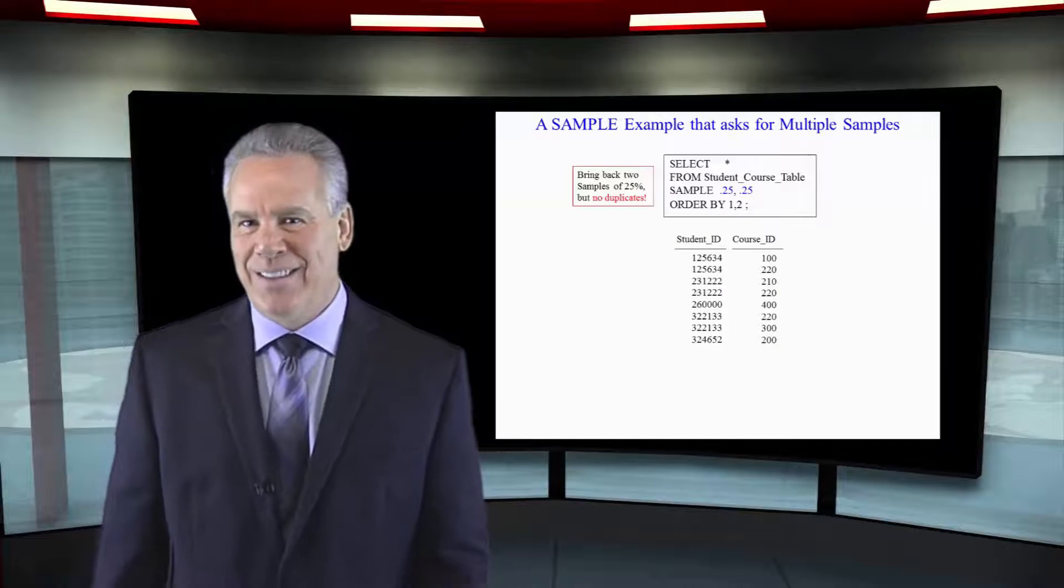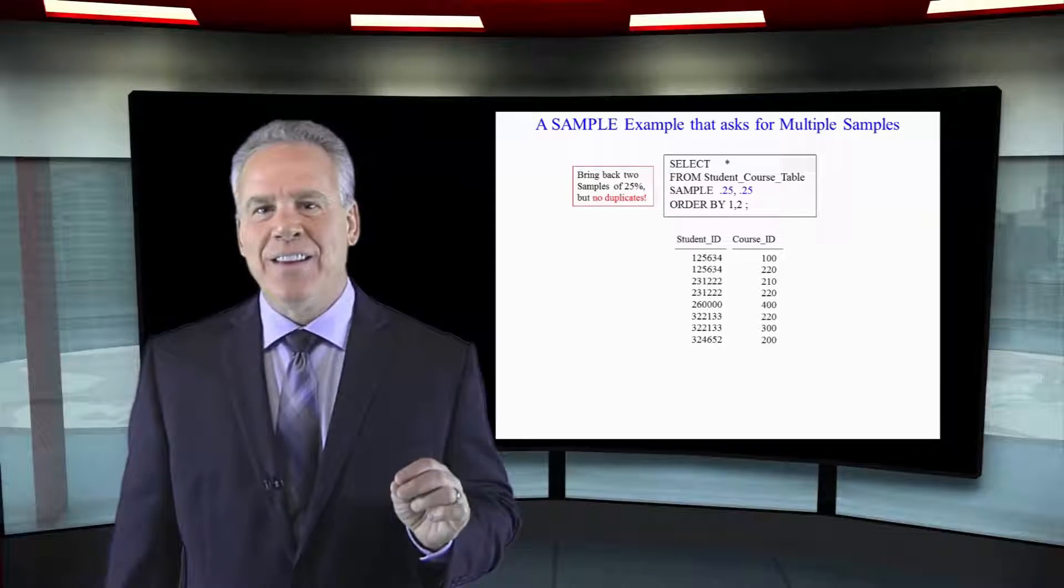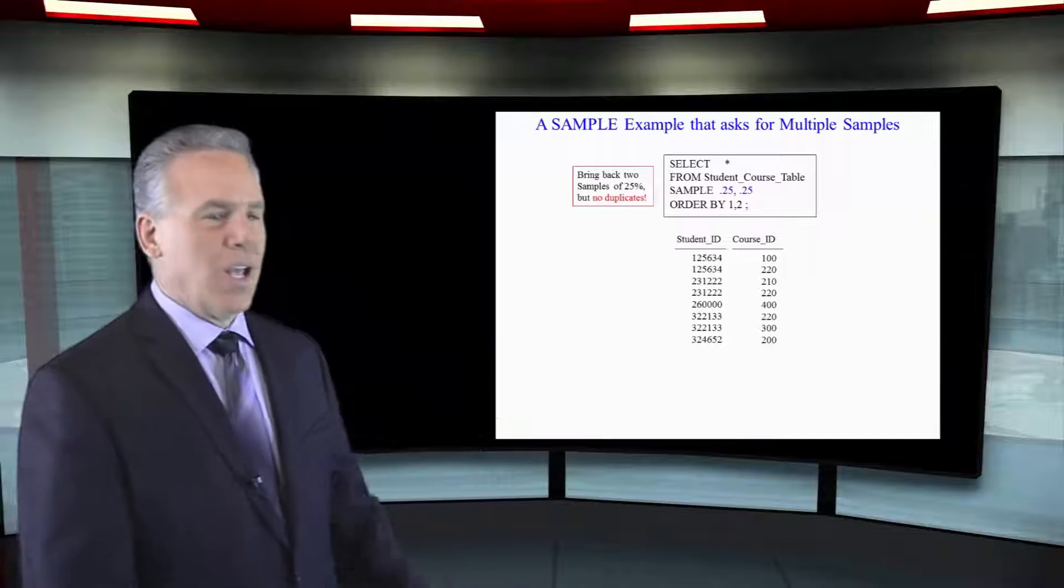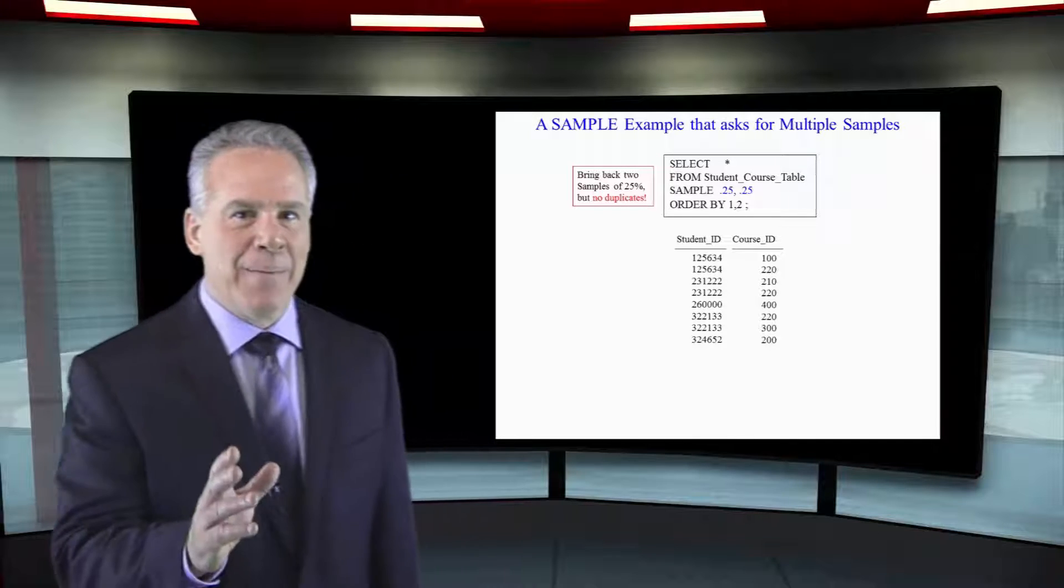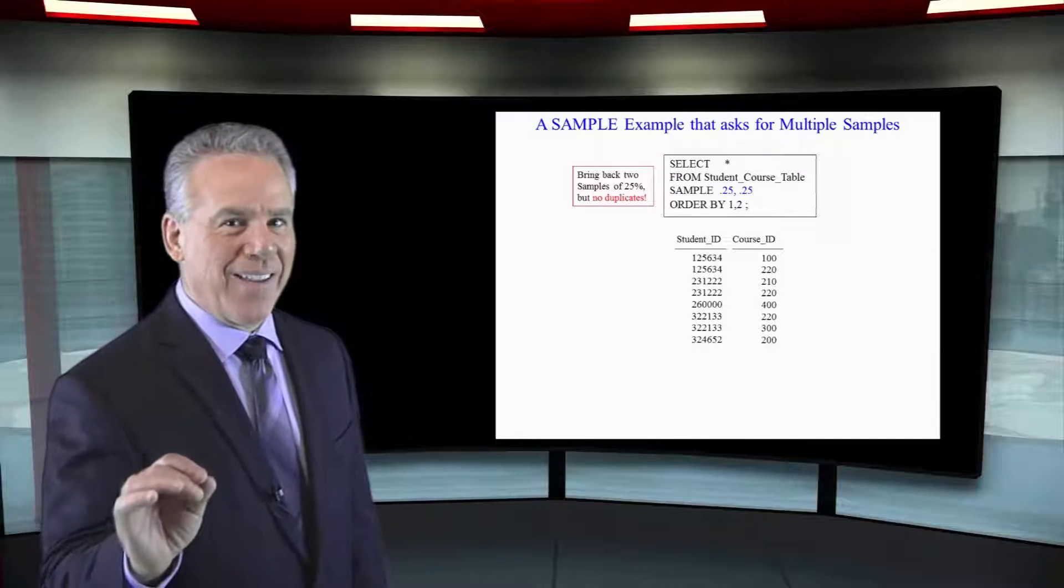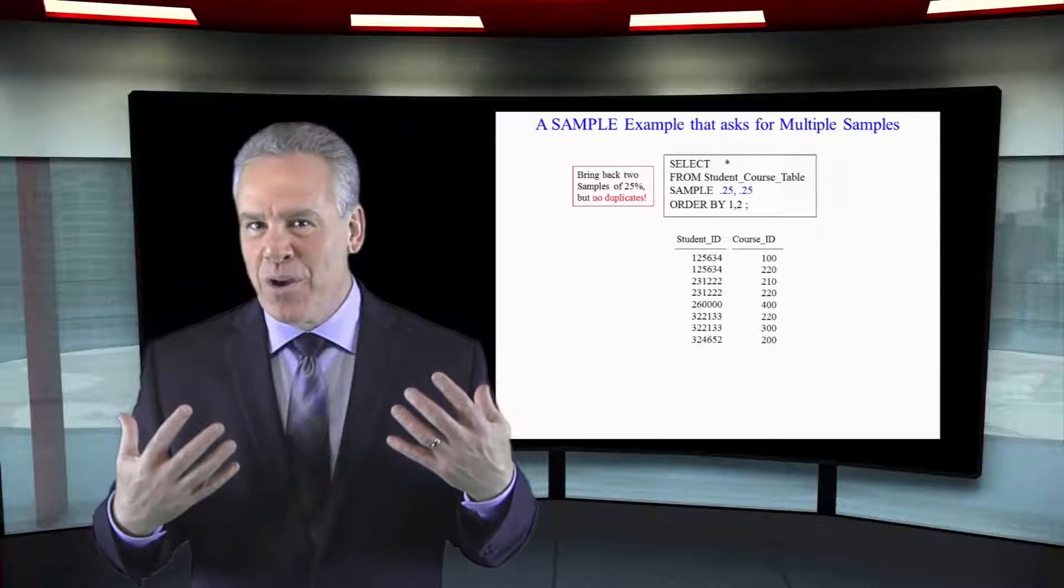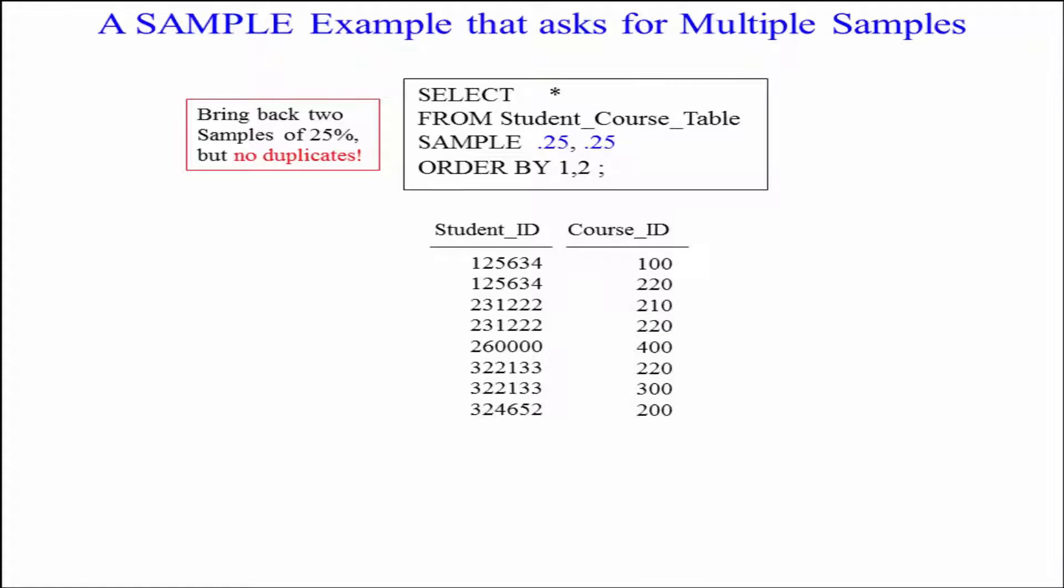Now take a look at this. Select everything from student course table sample point twenty five or twenty five percent comma point twenty five. We're going to get fifty percent of the rows coming back. There'll be two twenty five percent samples.